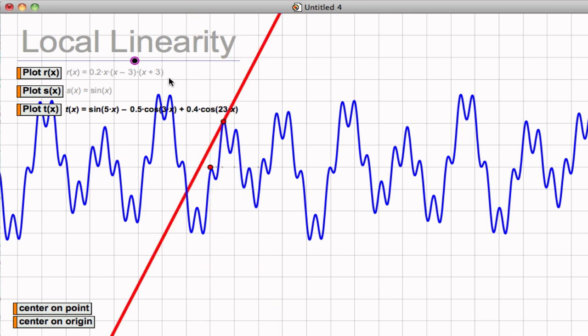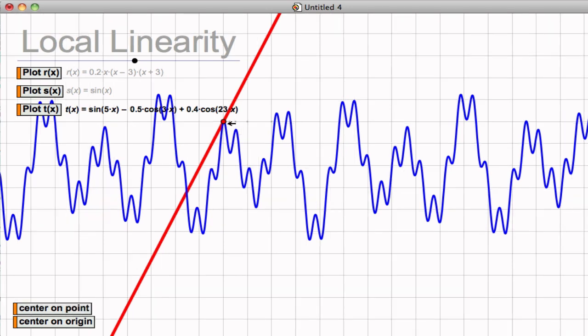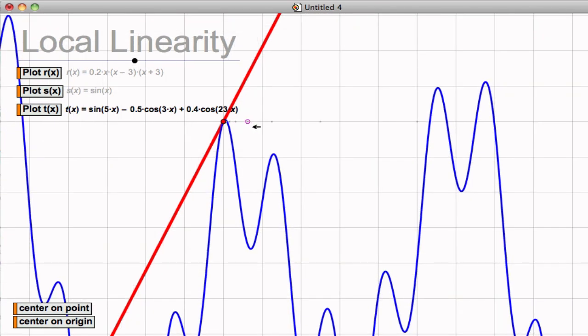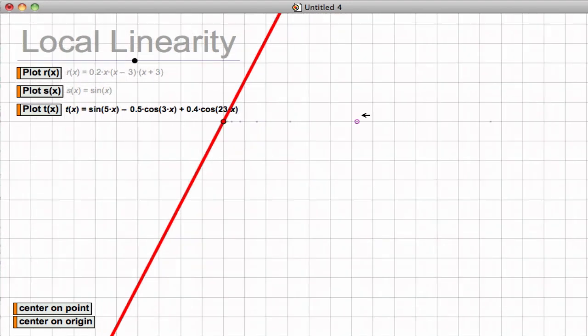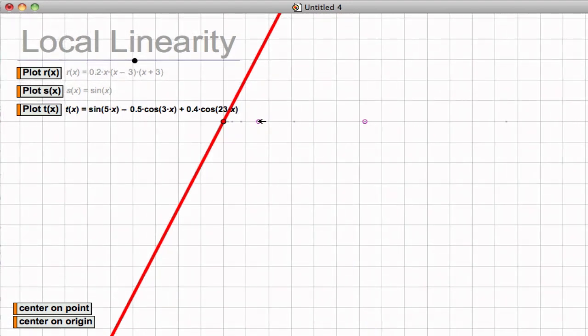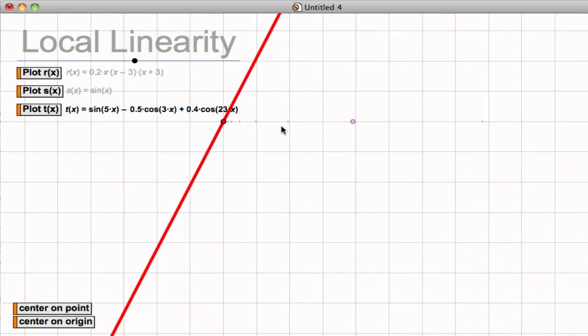But this curve does not at all look like a line. And yet, if we zoom in, we'll see that the curve on a local area actually is well approximated by its tangent line.